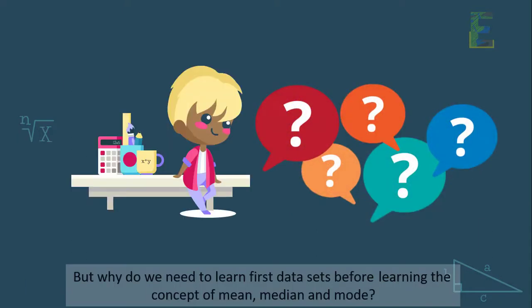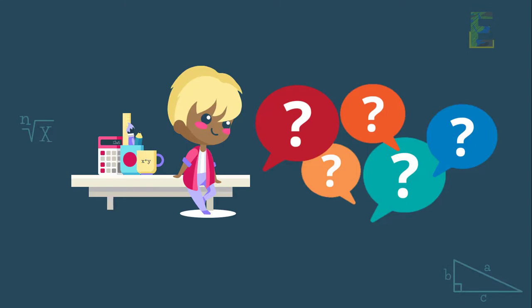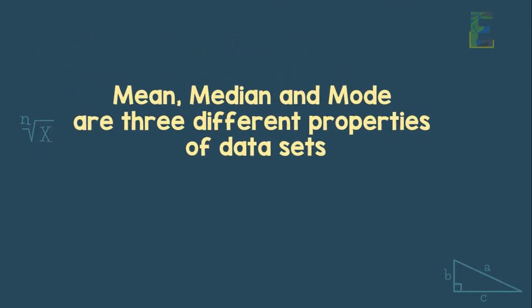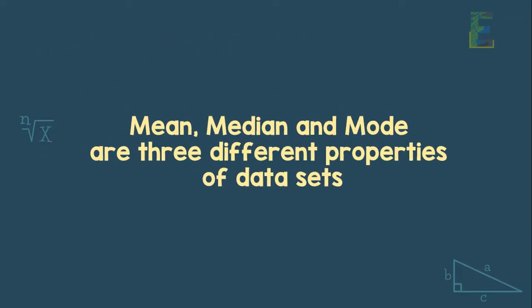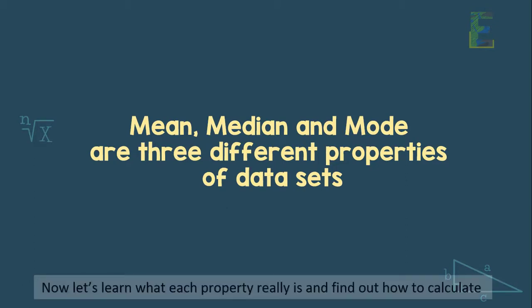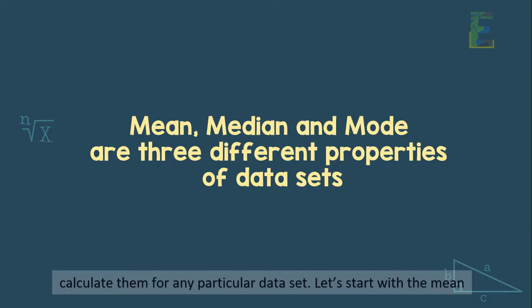But why do we need to learn first data sets before learning the concept of mean, median, and mode? It is because mean, median, and mode are three different properties of data sets. Now let's learn what each property really is and find out how to calculate them for any particular data set.